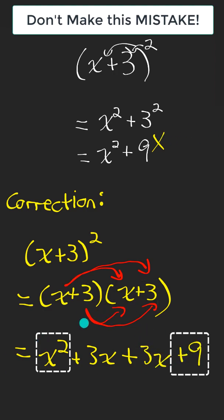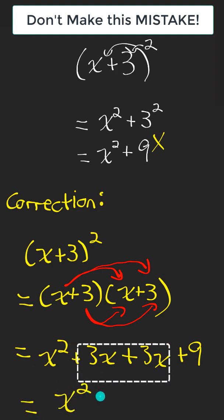So yes, there is an x squared and a 9, but there's also a middle term. It's x squared plus 6x plus 9.